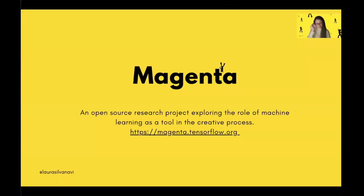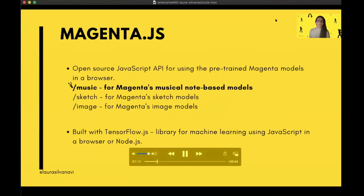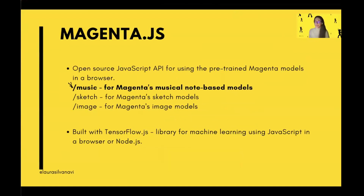Magenta is an open source research project exploring the role of machine learning as a tool in the creative process, covering not only music but art in general. The subset of that is Magenta JS, which provides a JavaScript API to use Magenta models in browsers. Today I will show you a quick demo of how to use those models for music in an application.